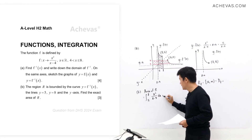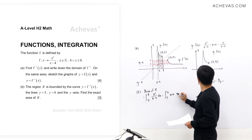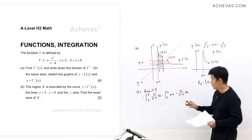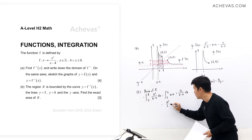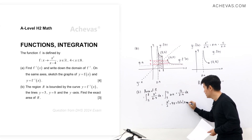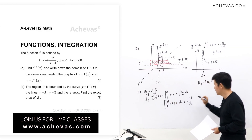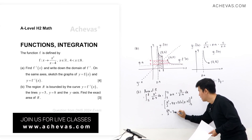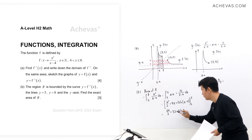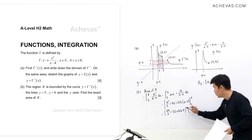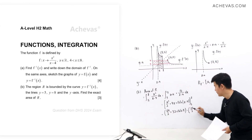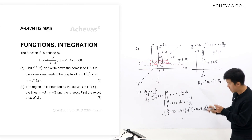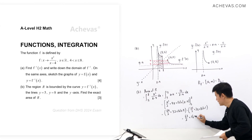Integrating from 5 to 8: ∫(x + 4 + 16/(x-4))dx = [x²/2 + 4x + 16 ln|x - 4|] from 5 to 8. Substituting 8: 32 + 32 + 16 ln 4. Substituting 5: 25/2 + 20 + 16 ln 1 = 25/2 + 20. The exact area of region R is 63/2 + 16 ln 4.